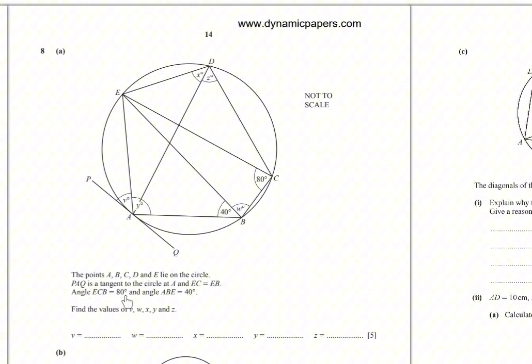Angle ECB equals 80 degrees and angle ABE equals 40 degrees. Find the values of V, W, X, Y, and Z.